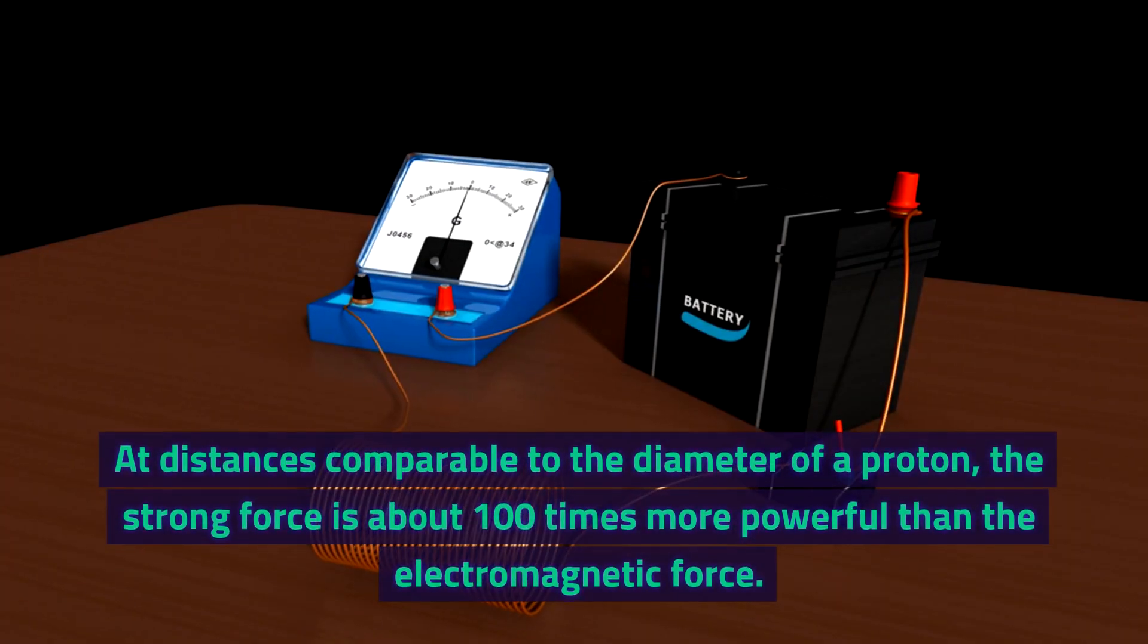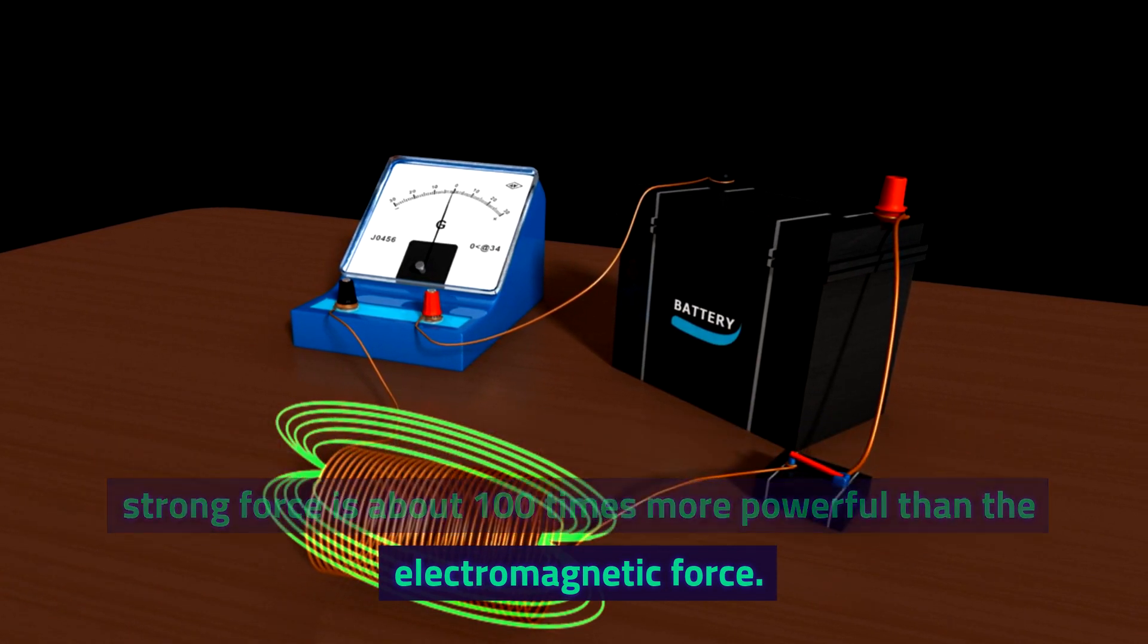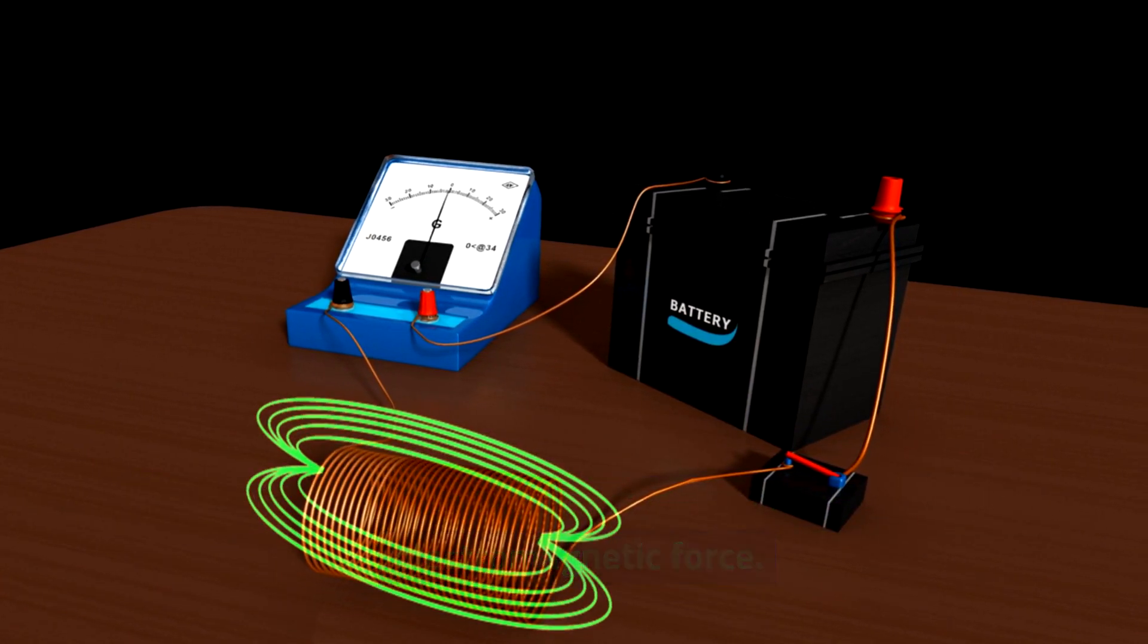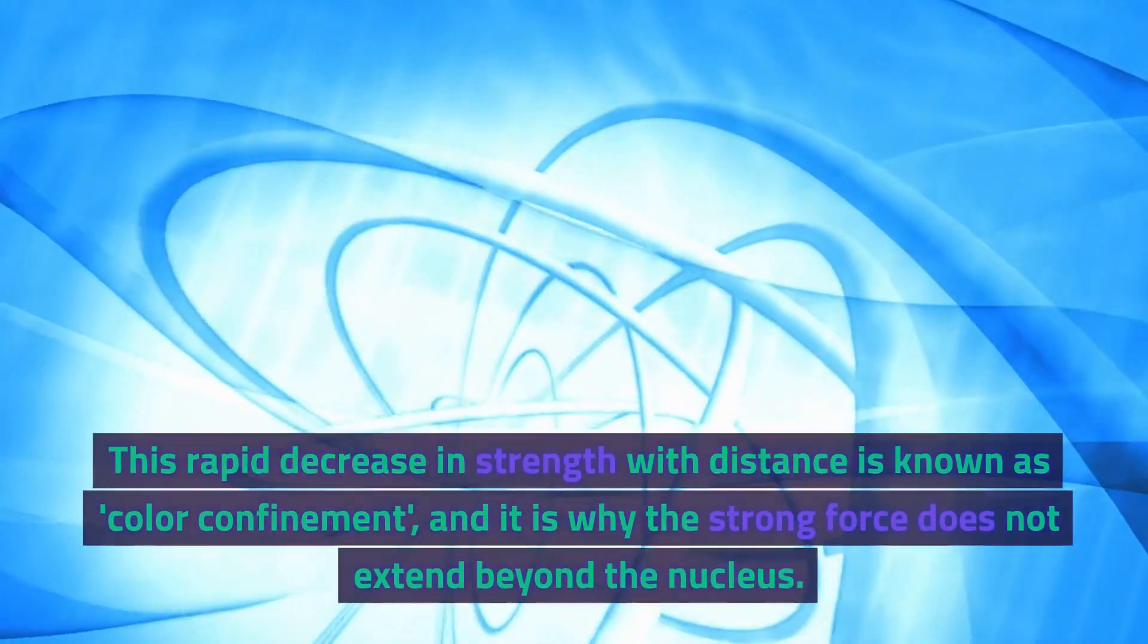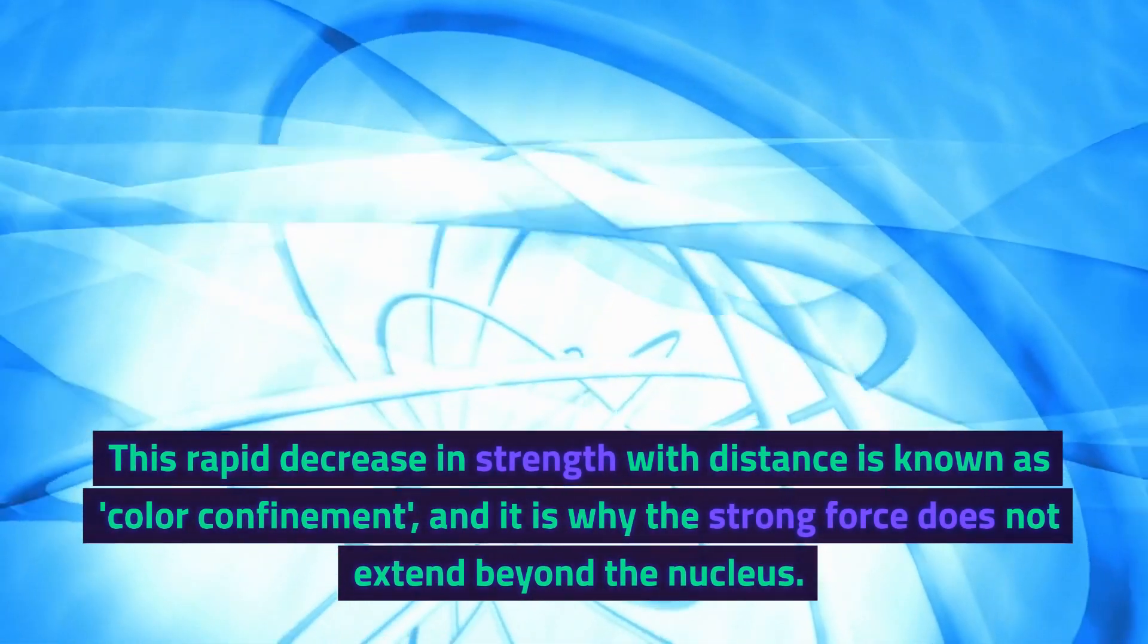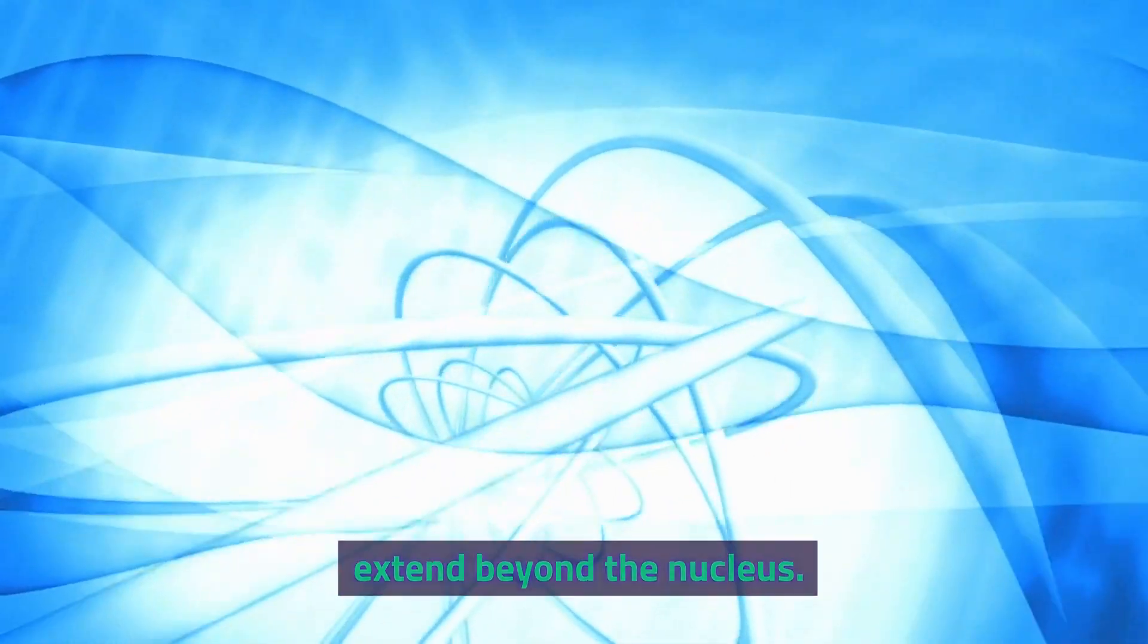At distances comparable to the diameter of a proton, the strong force is about 100 times more powerful than the electromagnetic force, but its power diminishes rapidly beyond this range. This rapid decrease in strength with distance is known as color confinement, and it is why the strong force does not extend beyond the nucleus.